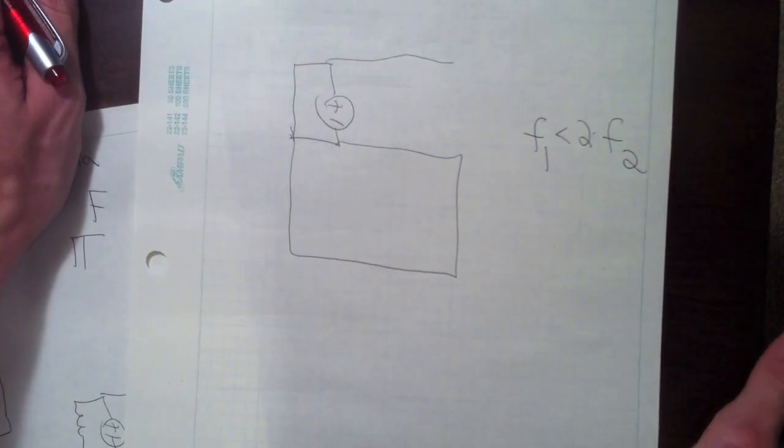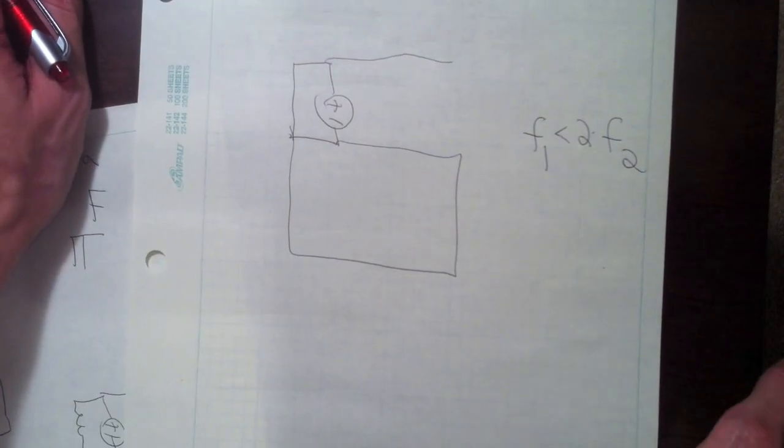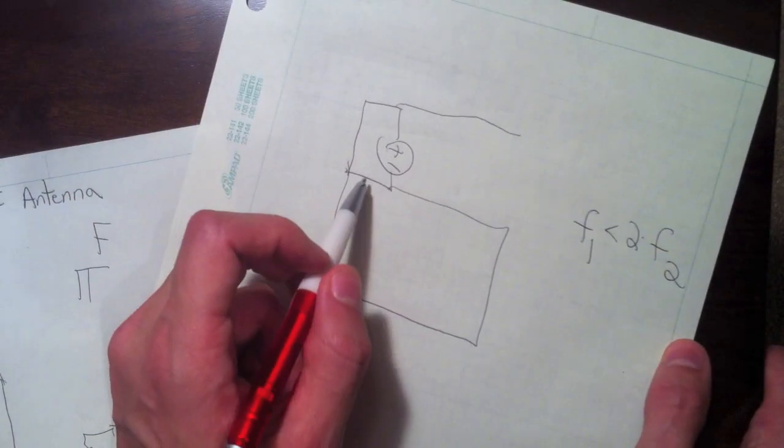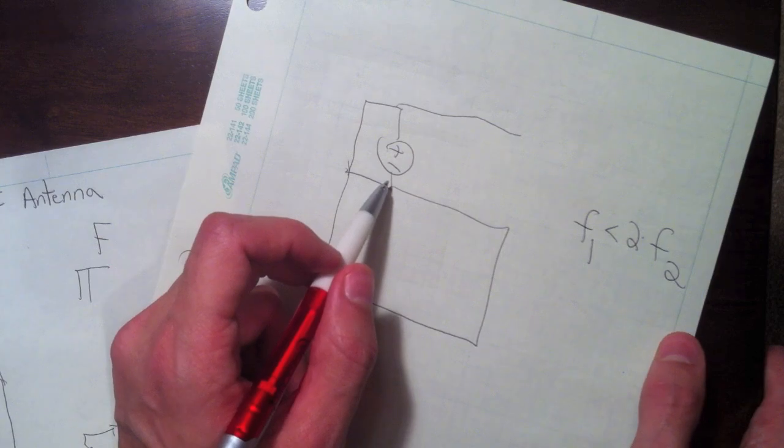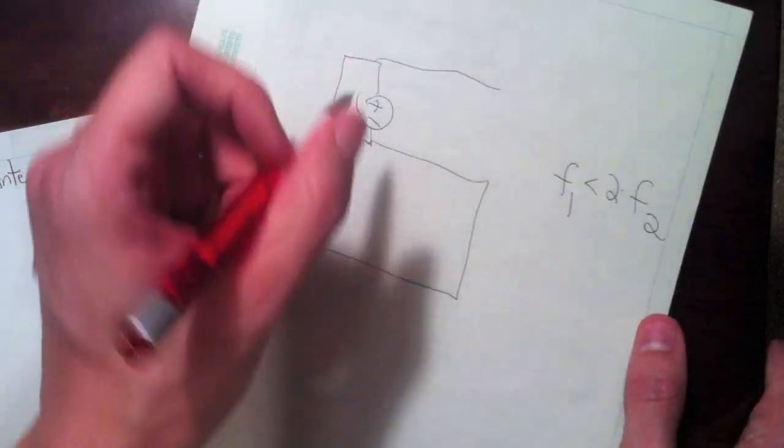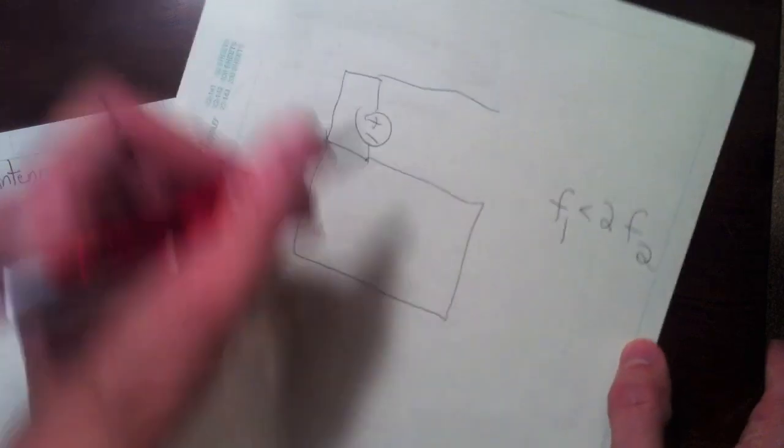We want this antenna to work in a region where two frequencies that are fairly well separated. If we wanted to make this antenna to work at F1, let's say this works at F1, and we wanted it to work at F2 as well.